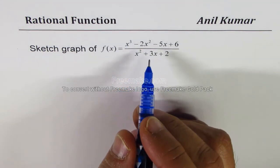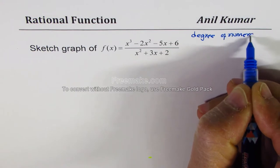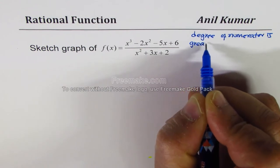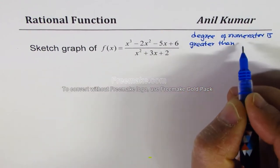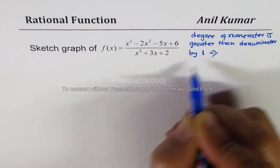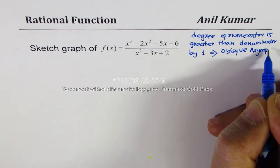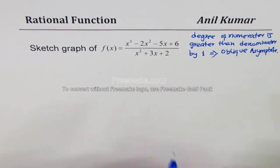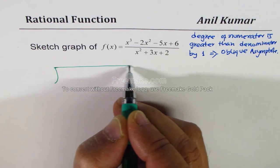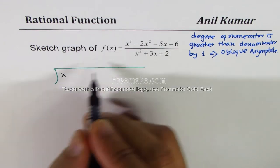The degree of the numerator is greater than the degree of the denominator by 1, and that means we have an oblique asymptote. Let's find the equation of this oblique asymptote. There could be different approaches to solve such questions, but my concentration here is on the oblique asymptote, so we'll begin with that.